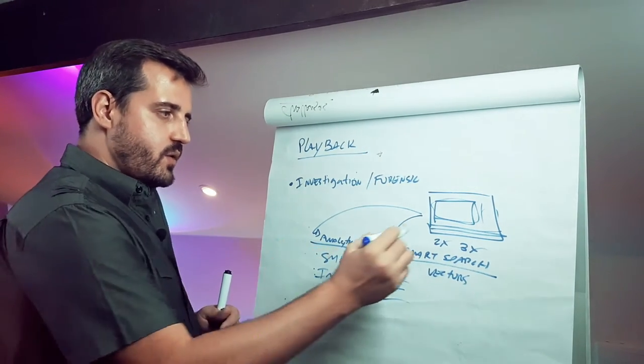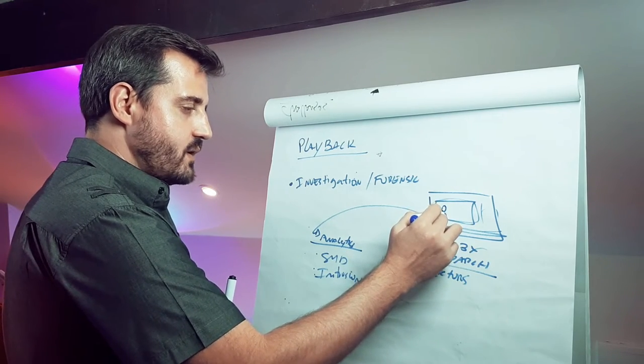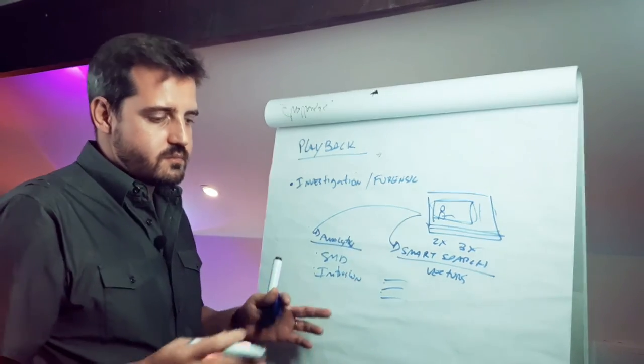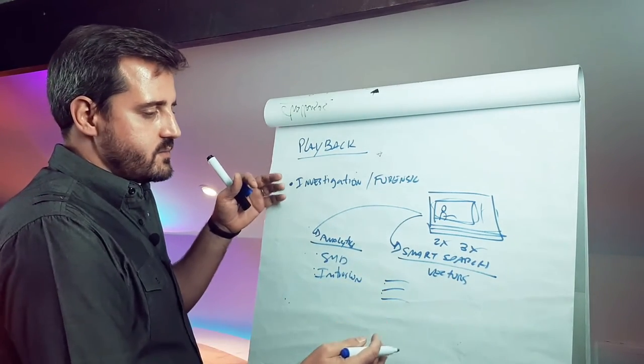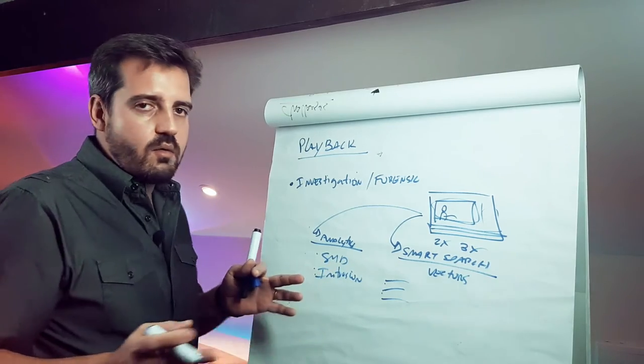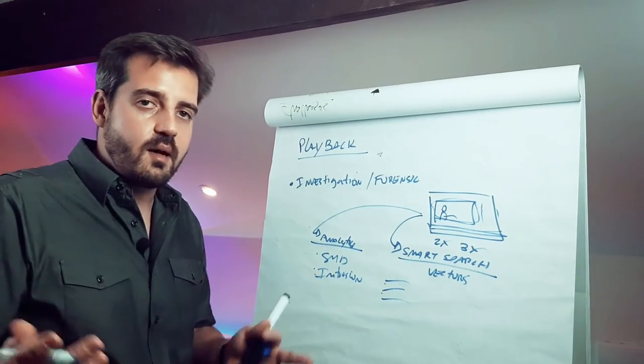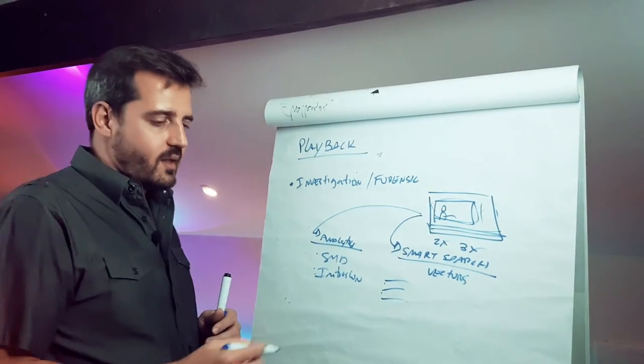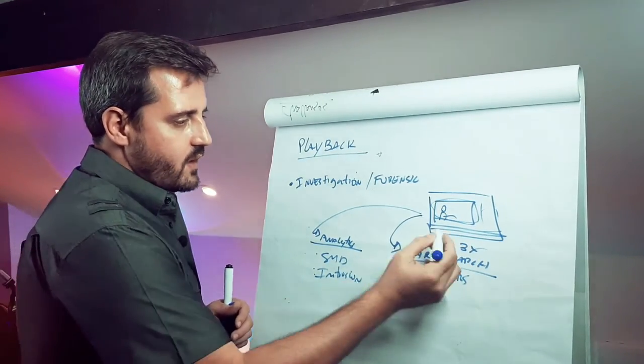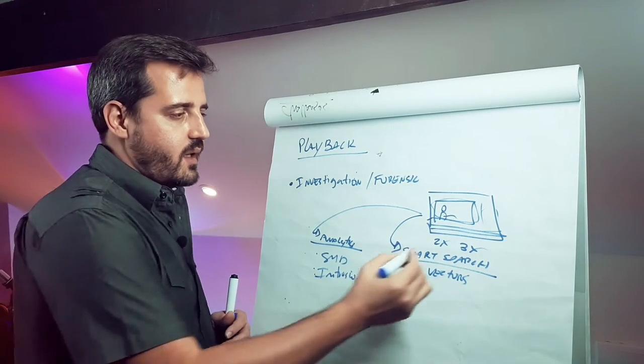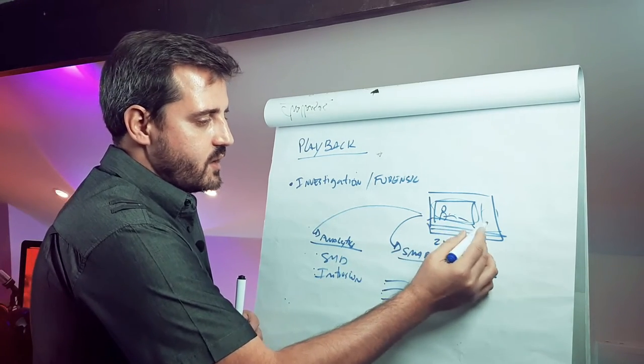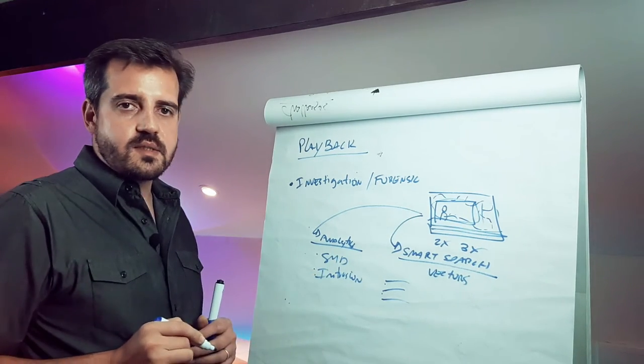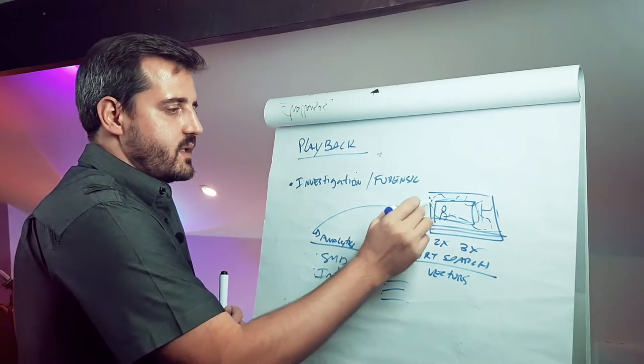But after you found when happened, normally it's not isolated only one camera. If it's a considerable, if it's not too small area, you have more than one camera. You normally have 3, 4, 8, 16 cameras in the site. And then this person came from the front area and goes to the storage and goes to other places and do a lot of stuff inside your store.